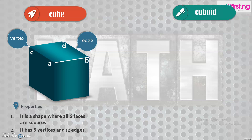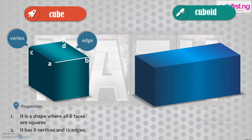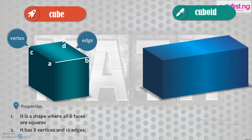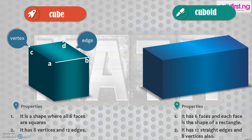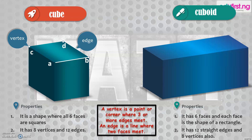Next we have the shape we call cuboid. The cuboid is similar to a cube, just that all the faces of a cuboid are rectangular in shape. The properties of a cuboid are: it has six faces and each face is the shape of a rectangle. It also has 12 straight edges and eight vertices. A vertex is a point or corner where three or more edges meet, while an edge is a line where two faces meet.